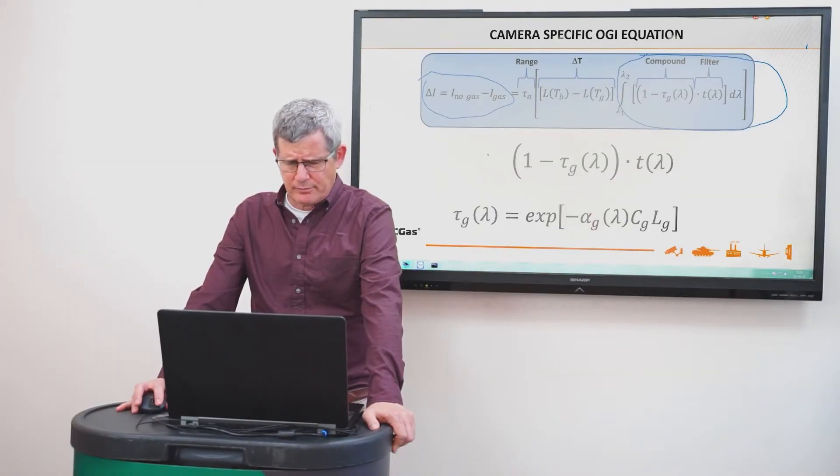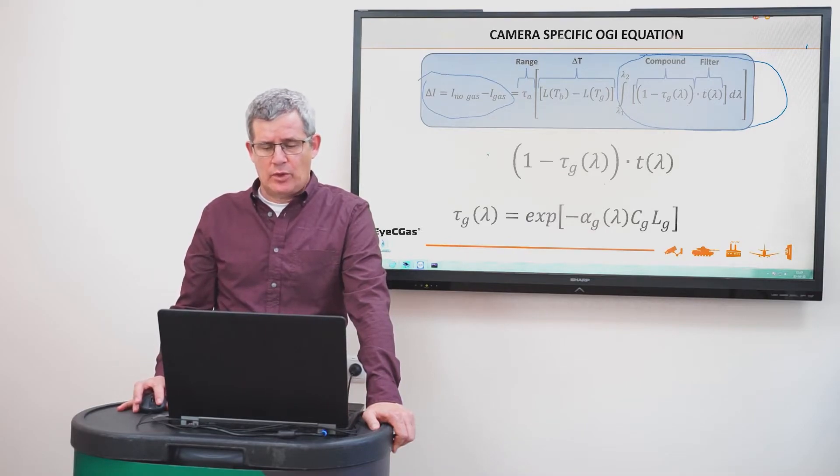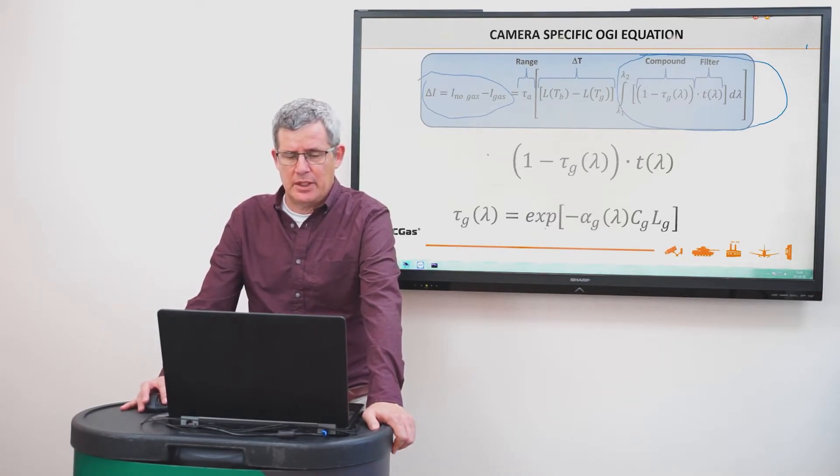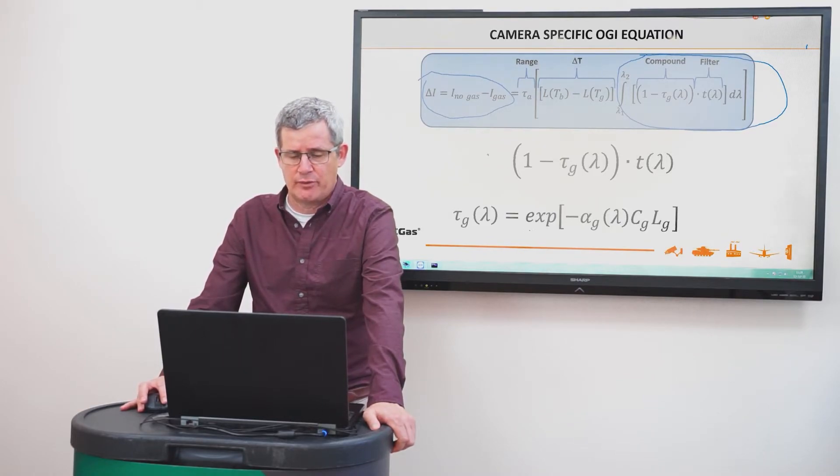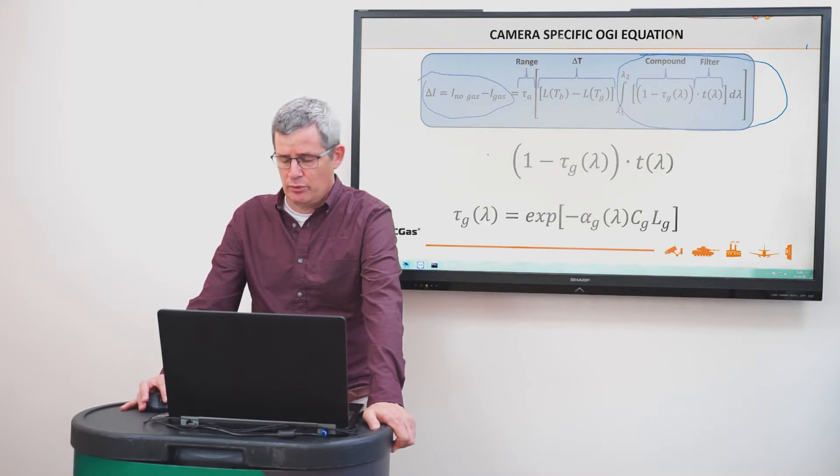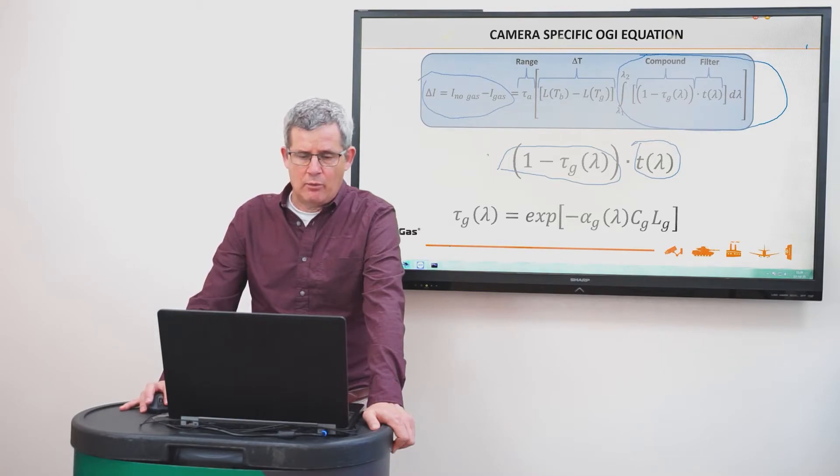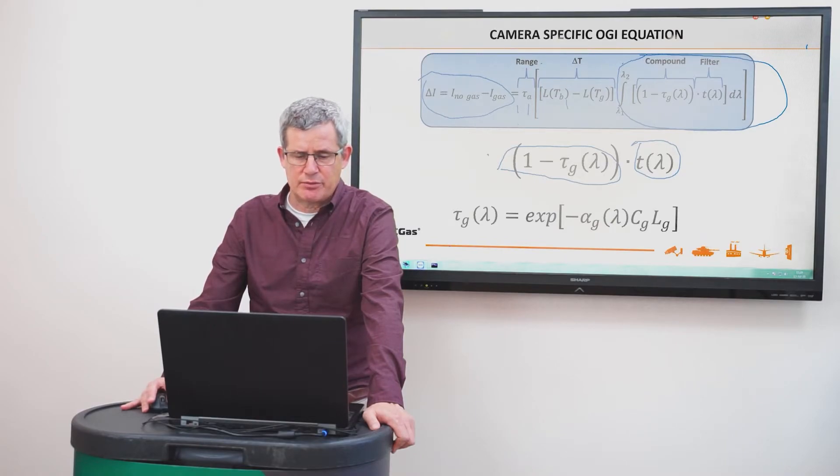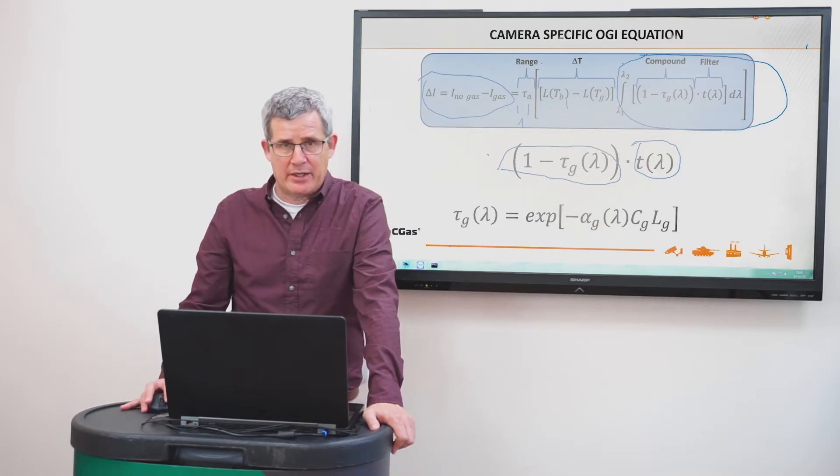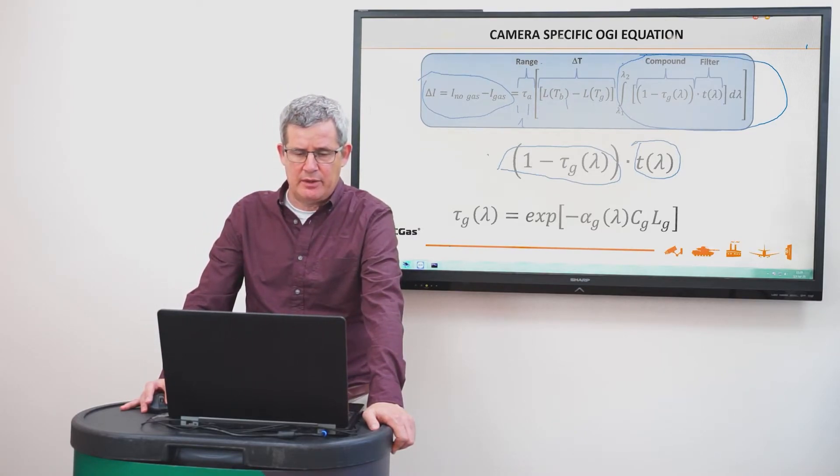If we look at the compound term here, we can see that it's one minus the transmission of radiation from the background through the gas plume. It's right here times the transmission of the filter. And when we look at very close ranges, we can assume the transmission between the background and the camera, the air between the gas plume and the camera in very short ranges is equal to one.